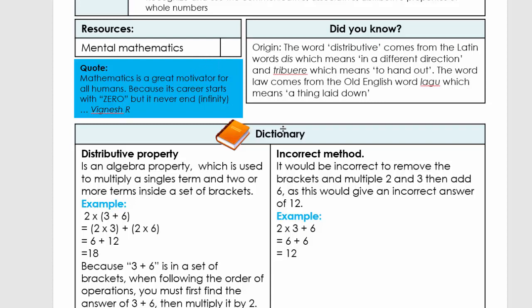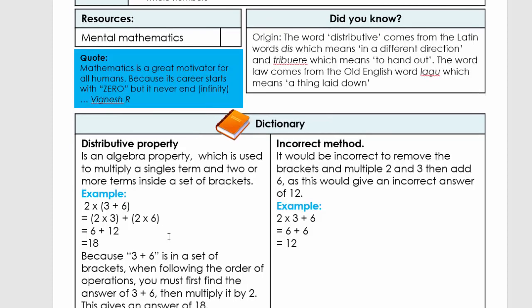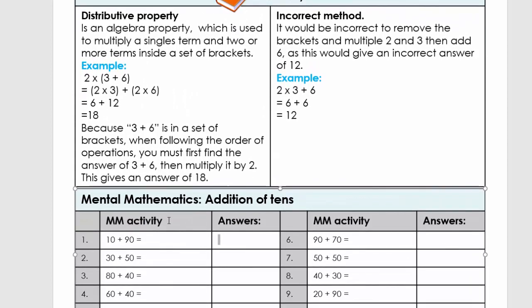You need to look at the resources, the quote, and then the distributive property. A lot of times when we start doing multiplication with bigger numbers, we want to skip it or just use the column method. Please don't — the technique is so important. Later on, 2×3 + 2×6 becomes x×3 + x×6. If we skip this method, learners coming into grade eight and nine will struggle with algebraic expressions. It may feel like a new method, but it is very important for mathematical skills at a later stage.